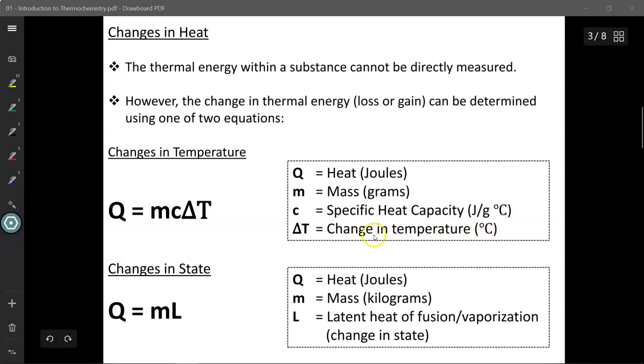Now, unlike grade 11 chemistry where you had to convert all Celsius values into kelvins, because we're dealing with a change in temperature, you can measure temperature in either Celsius or kelvins because they are the same magnitude. So an increase of 15 degrees Celsius is the same as an increase of 15 kelvins. They just have different starting points, that's all.